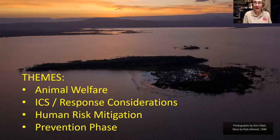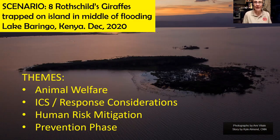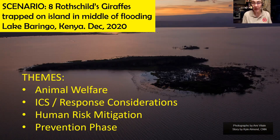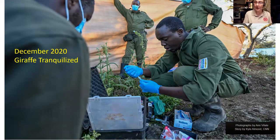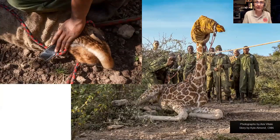Our first example comes from Kenya. Rothschild giraffes are an endangered species and there was flooding at a lake, so they decided to start moving these animals. They came up with a great plan: they had veterinary oversight, the right drugs, they weren't in a hurry, they set up fladry and did all the things needed. When you bring down an endangered giraffe — only 800 left — you don't want to kill it.